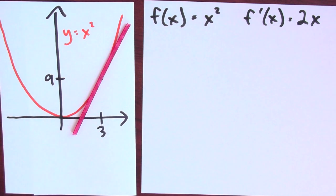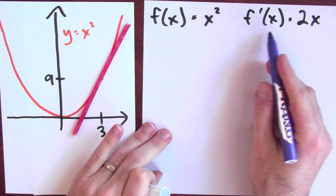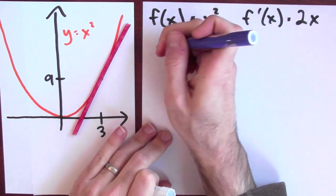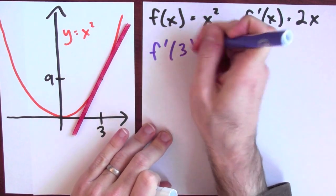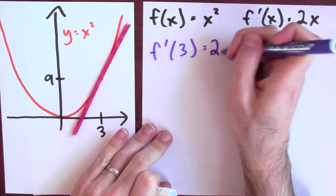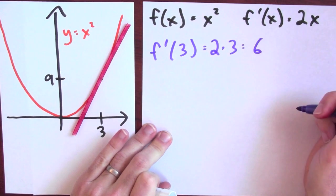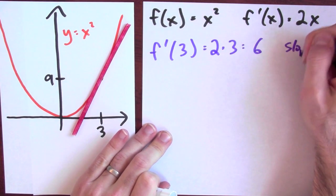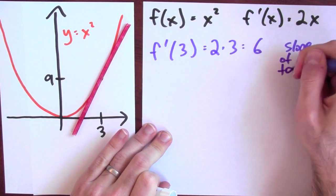So to do that, we're going to use the derivative. And I know that the derivative of x squared is 2x. So the slope of the tangent line at the point 3 is 2 times 3 is 6. And that's the slope of the tangent line.